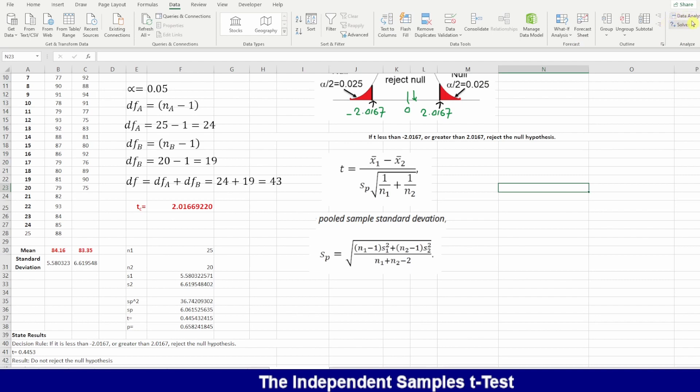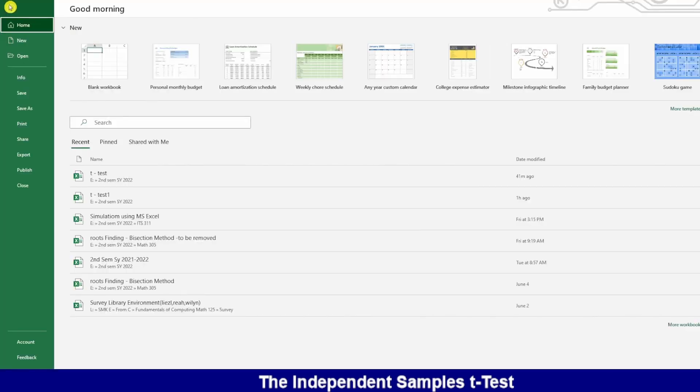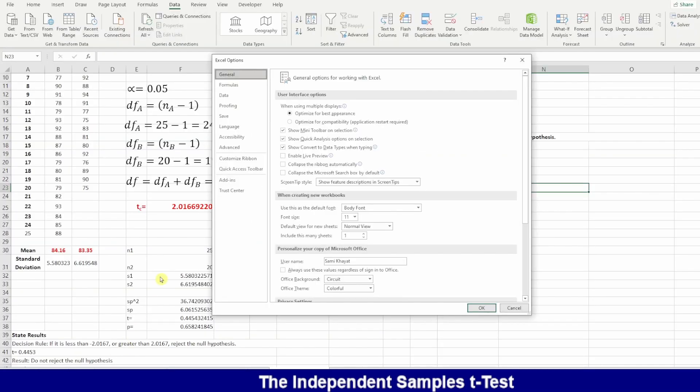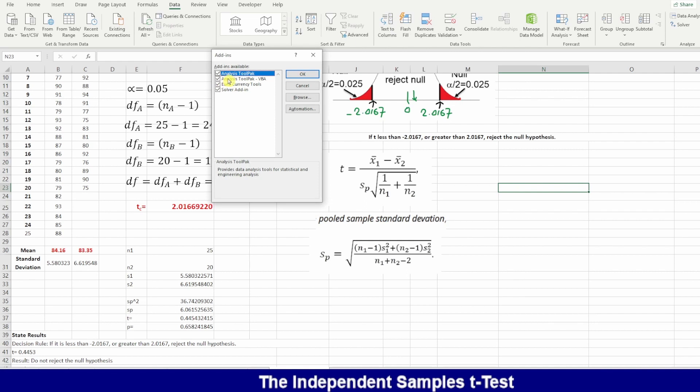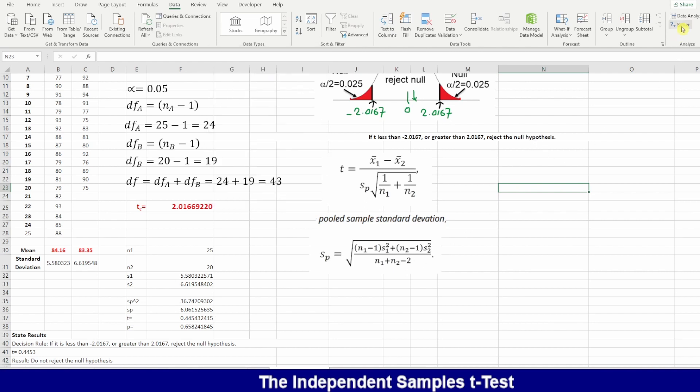Go to here, Files, Options, and then you go to Add-Ins, and then you go to Excel, and then you check the Analysis ToolPak. I have it already. I don't need to do it. I will select from here two sample equal variance, this one. And then okay.